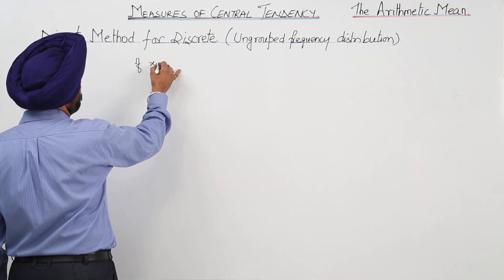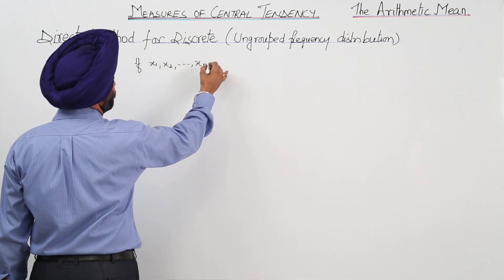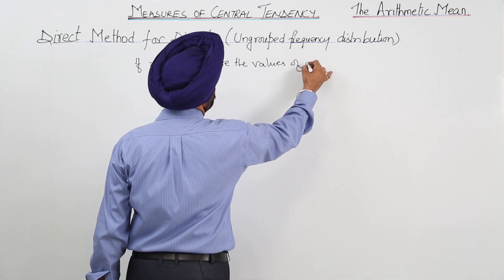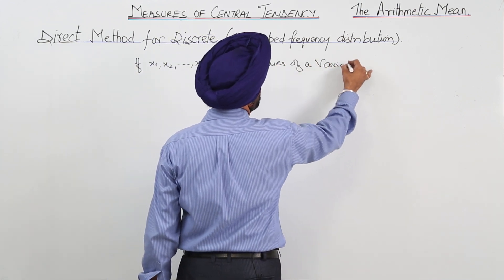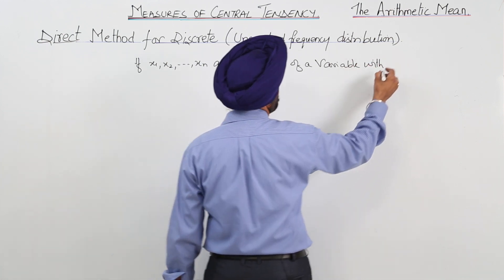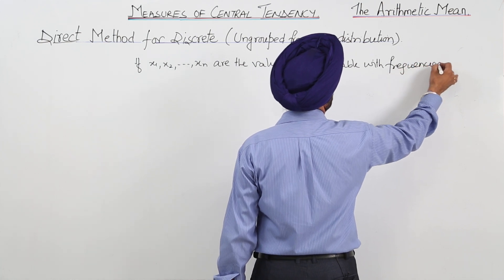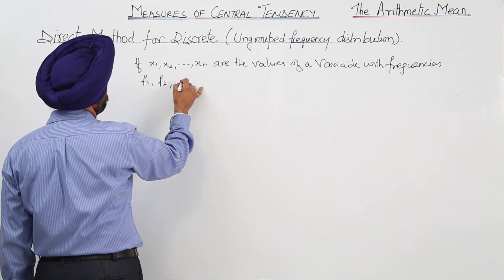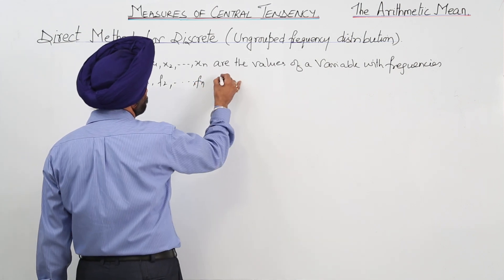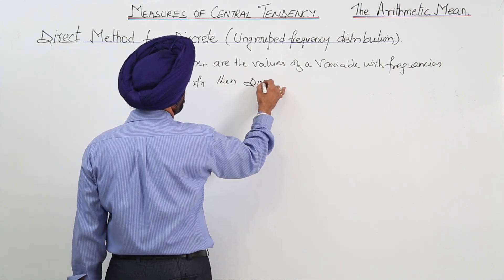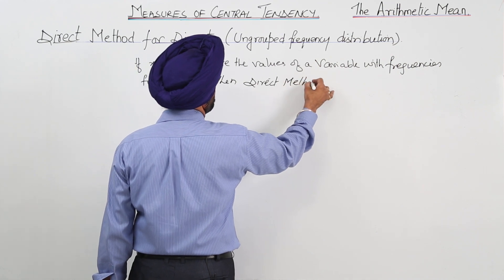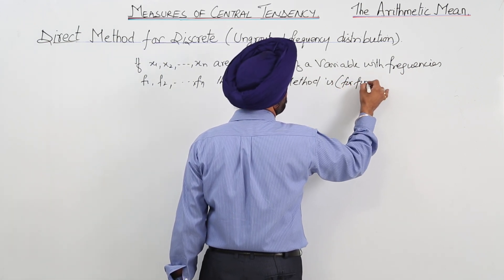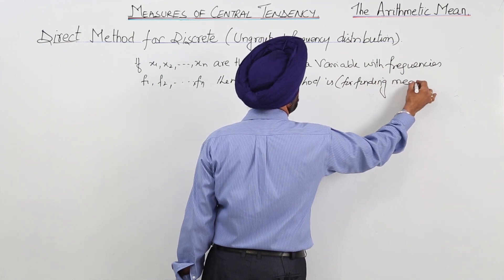If x1, x2...xn are the values of a variable with frequencies f1, f2...fn, then direct method is direct method for finding mean.